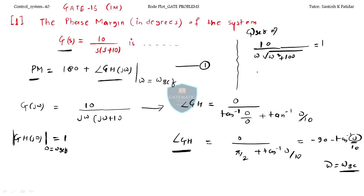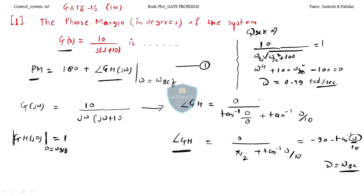Solving this equation, you get ω_gc equals approximately 0.99 radians per second. There are four values from this equation — one of them will be 0.99, and the remaining will be negative. Since frequency must always be positive, ω_gc = 0.99 rad/s.